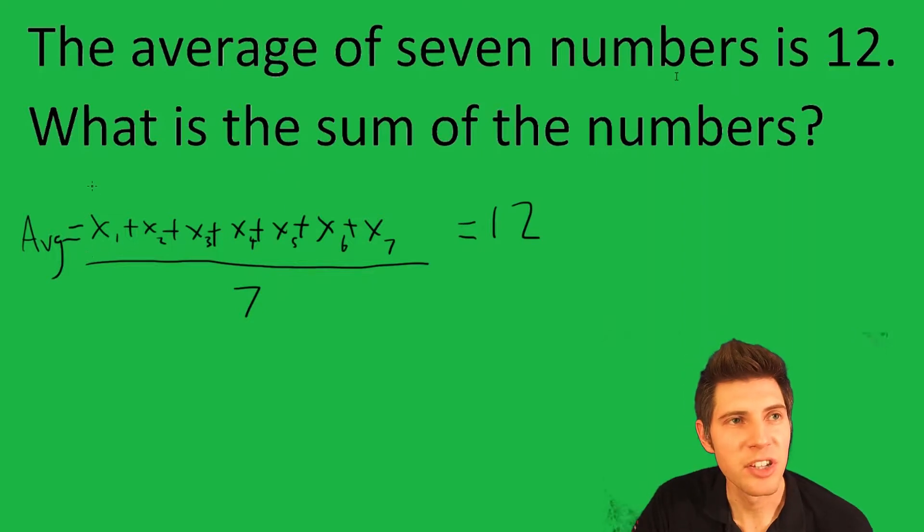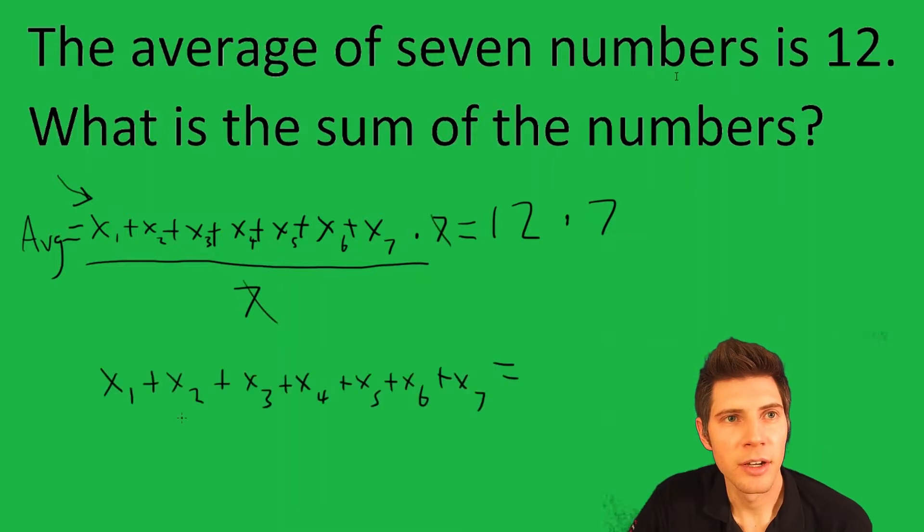Well, the sum of the numbers is just this top piece right here. It's all the numbers being added together. So we're just going to multiply both sides by 7, so now these 7s cancel and now all those added up...